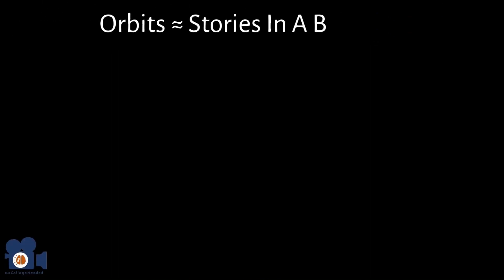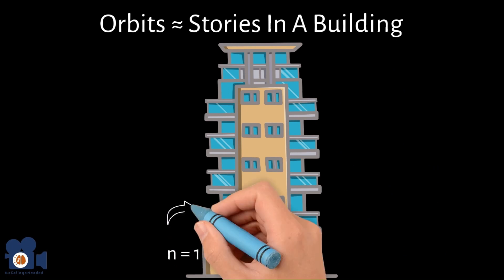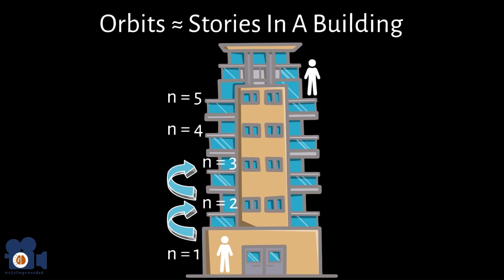This situation is analogous to stories in a building where the bottom floor is where N equals 1, and as you move up floors, N increases to 2, 3, etc. Just like in a building, the higher you go up, the more energy you have. Due to this, science came up with the term ground state for electrons on the lowest level and the atom's most stable state.